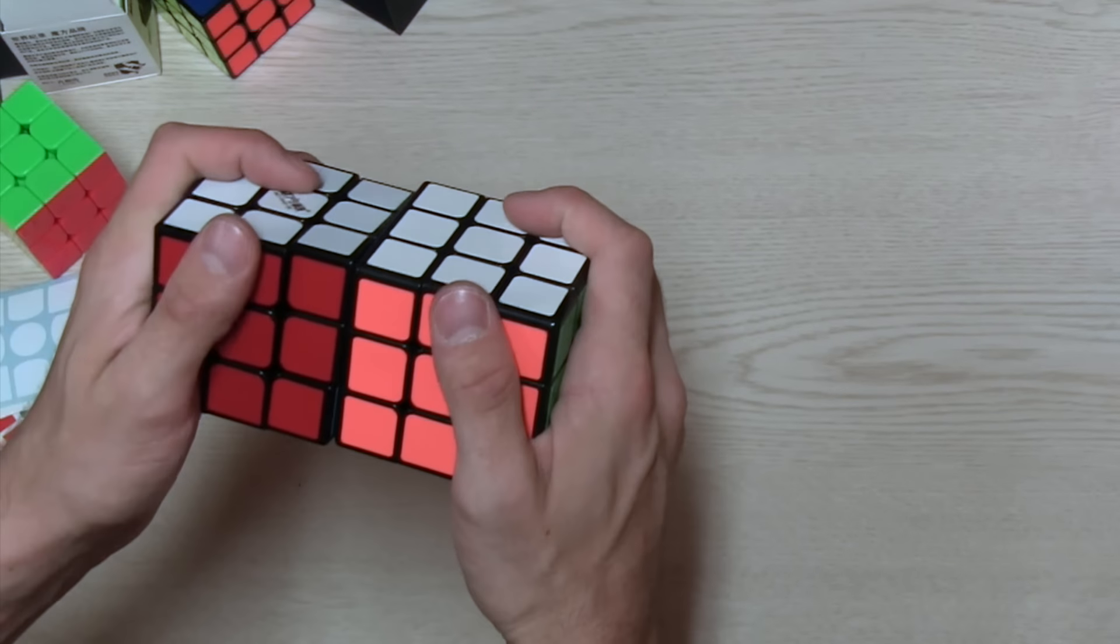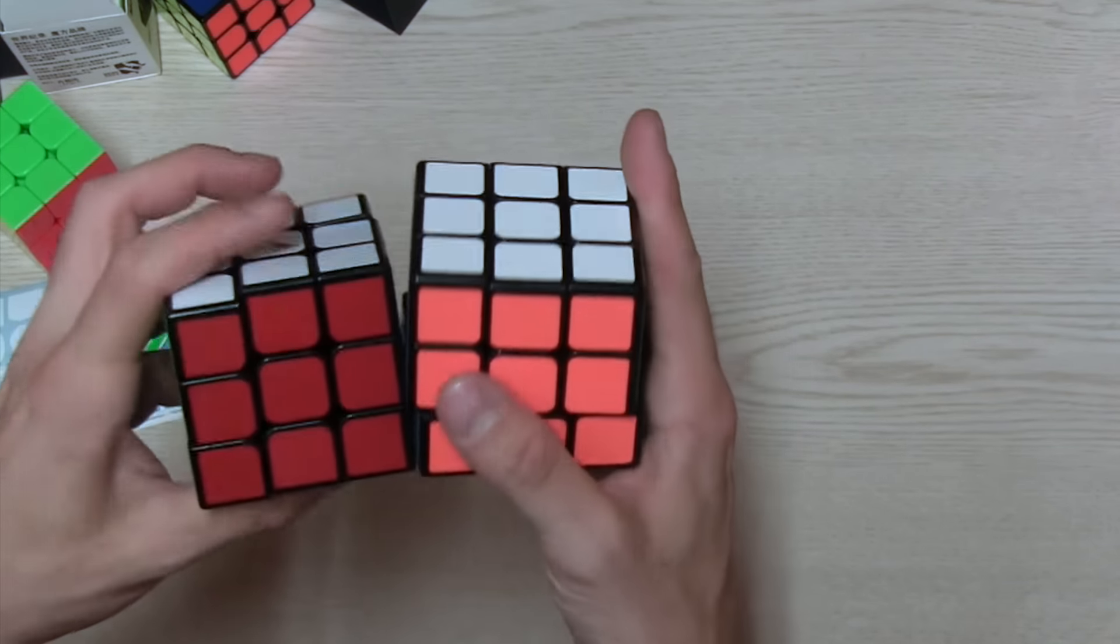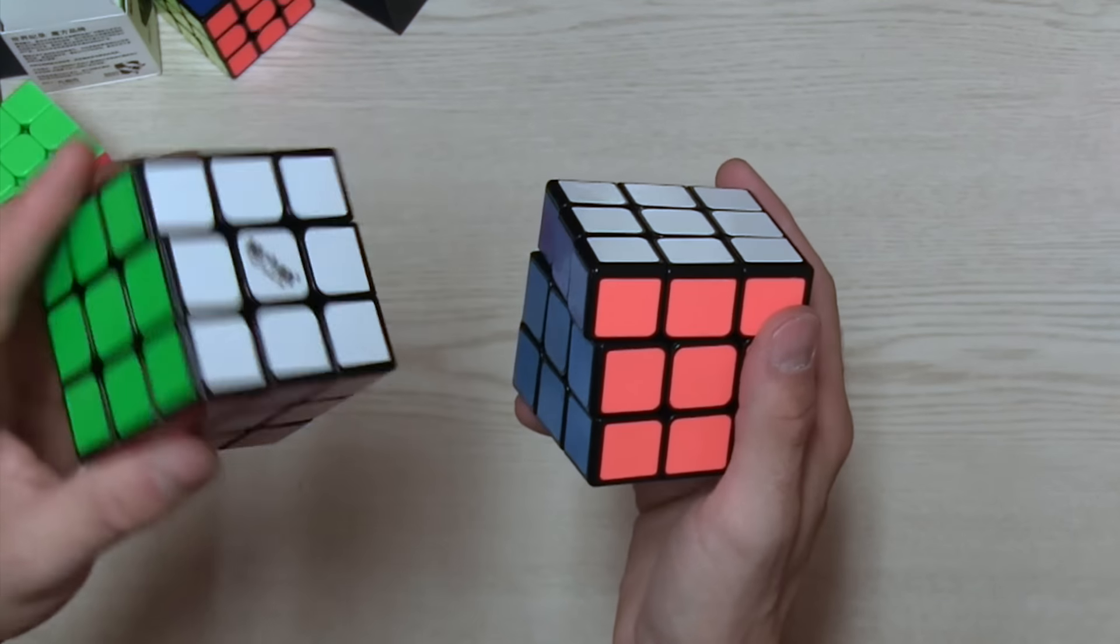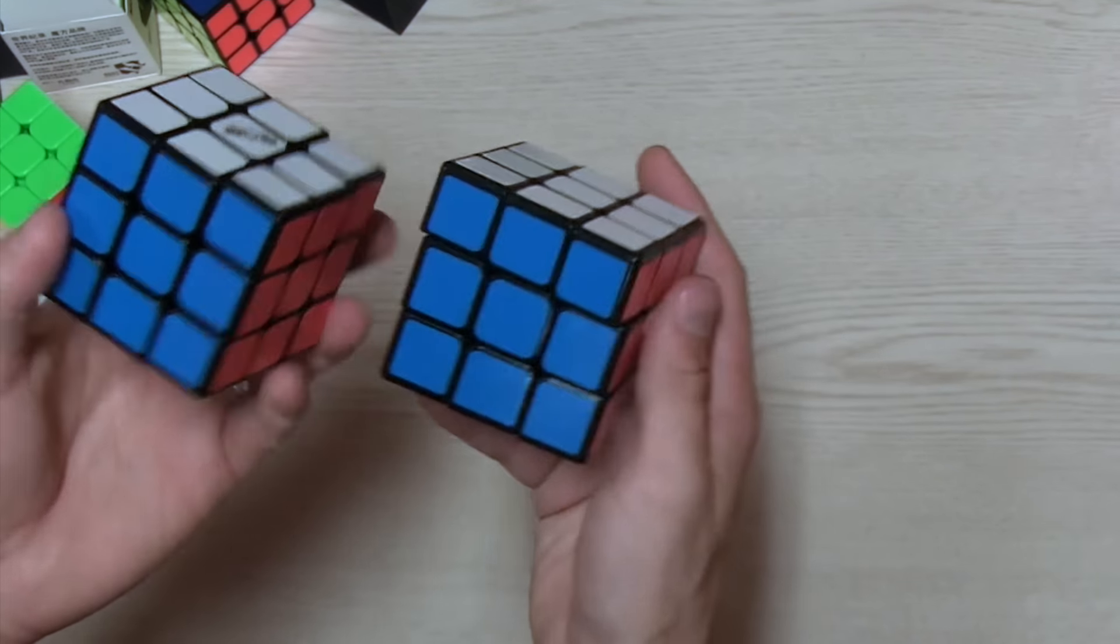Now as far as how they feel, the Qiyi one is a little more rounded. So if you like a blocky feel, the Legend would be the one to go. For the Qiyi one, it's a more rounded feel if you like that.